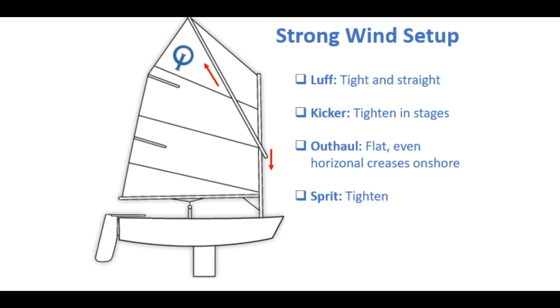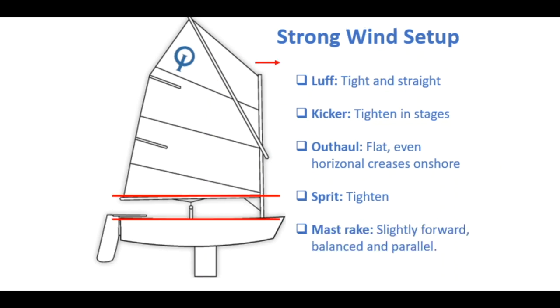The sprit also gets tightened up in stages, always aiming for a few speed creases. And our mast rake moves forward slightly, keeping the boom parallel to the deck due to increased kicker tension. But most importantly, balancing the helm out, helping keep the bow down and the boat driving forward.